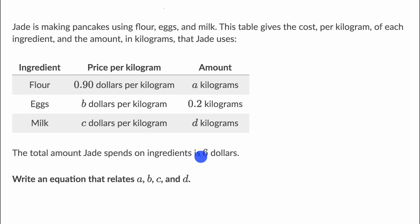The total amount Jade spends on ingredients is $6. Write an equation that relates A, B, C, and D.